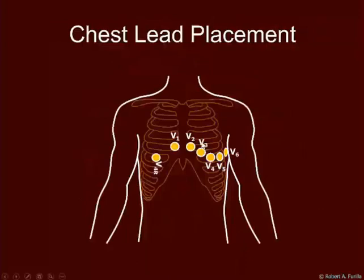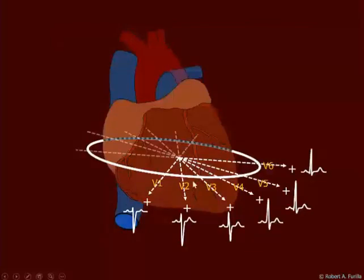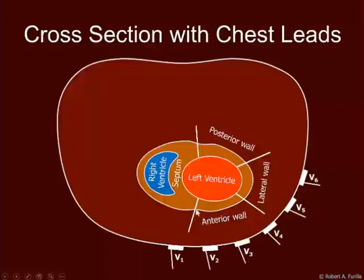We place the chest leads, also called precordial leads — V1, 2, 3, 4, 5, and 6 — in this arrangement, and I've placed V4 right over here. You can also place leads 3, 4, 5, and 6 on the right side to record a transverse section, and leads V7, 8, and 9 on the back below the sternum to face the posterior wall. Looking through these leads in a transverse section: the anterior wall faces V2, V3, and V4; the lateral wall faces V5 and V6; the septum faces V1 and to some extent V2; and the posterior wall would face V7, 8, and 9.